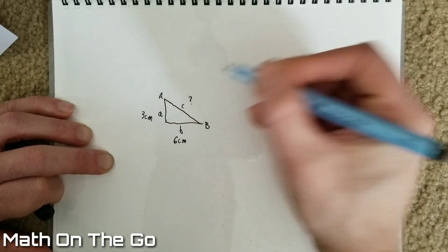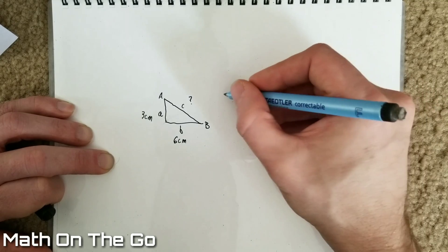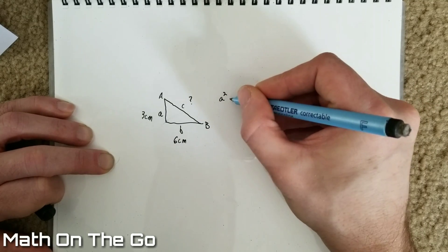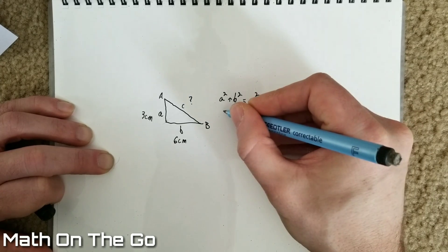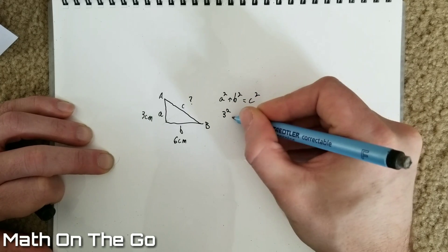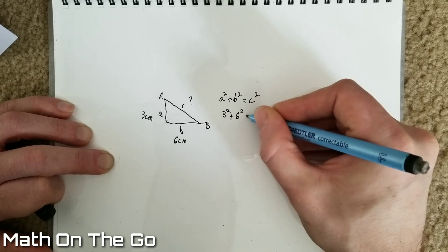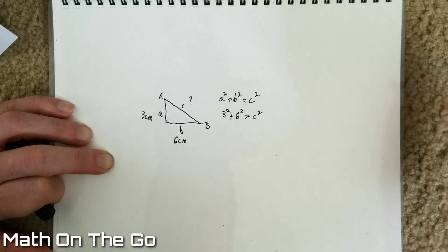How long is this side? Well, with Pythagorean theorem, we just substitute in some numbers. So, our A is three squared, our B is six squared, and we're trying to find our C.